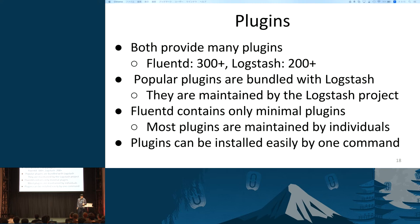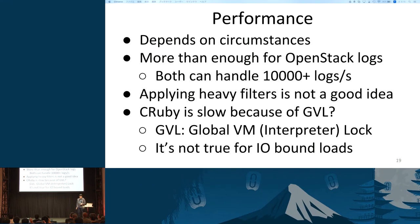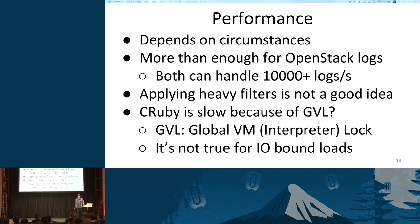Plugins can be installed easily with one command for both Fluentd and Logstash. Next is performance. To be honest, I can't say which one is faster because that depends on circumstances. What I can say is that both Fluentd and Logstash are more than fast enough for OpenStack — they can handle more than 10,000 logs per second. Filters greatly affect performance, so it's not a good idea to apply heavy filters on log collectors. Heavy workloads should be performed on data processing structures.